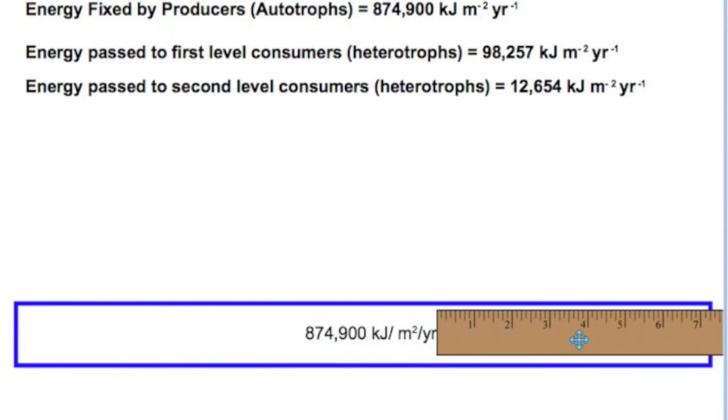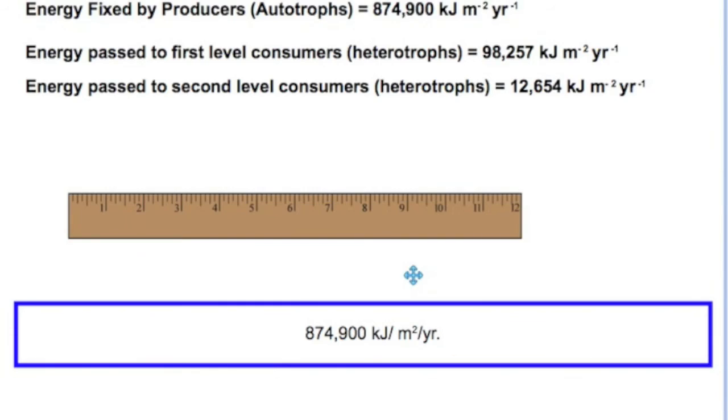If we brought out our ruler, which unfortunately measures in inches, we would see that this particular block measures about 18.5 inches. If that is the case, how big should the second block be, the block that represents energy passed to first level consumers?